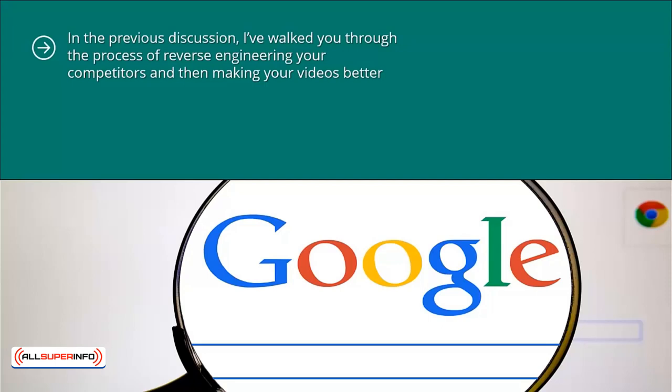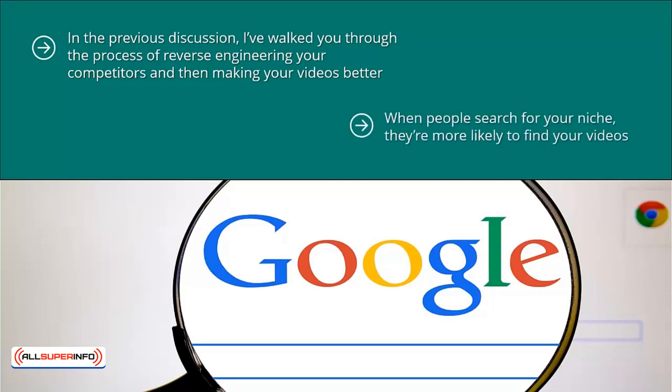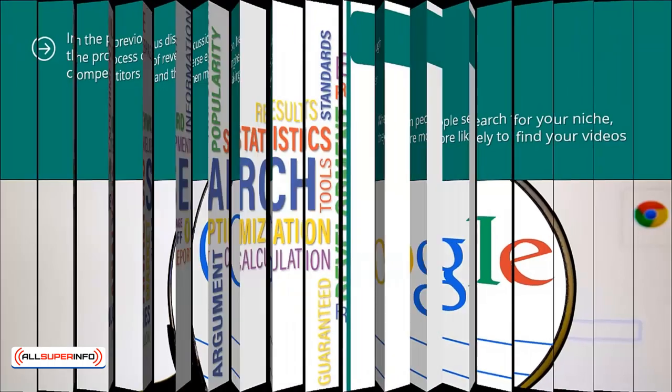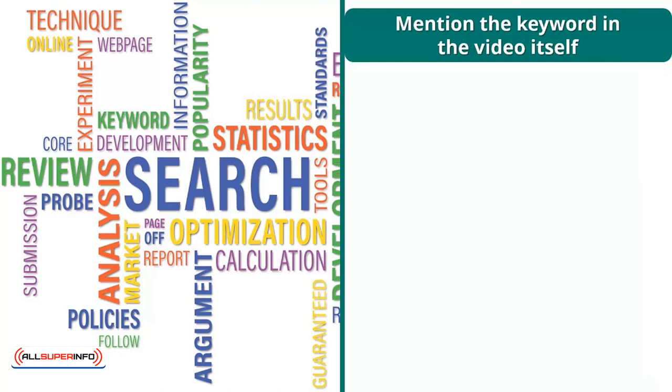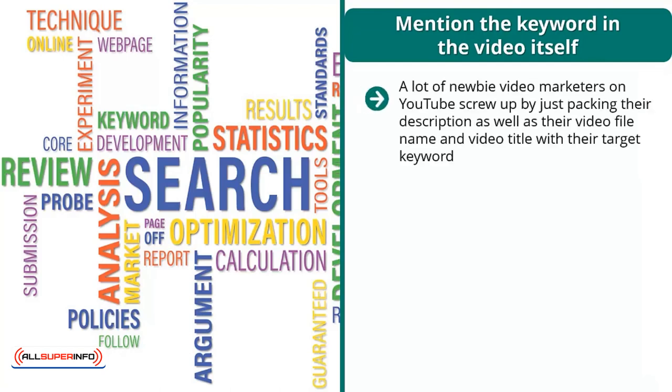How come? Well, if you follow these tips your videos will probably be more visible on YouTube. When people search for your niche they're more likely to find your videos. These tips mostly turn on visibility — they are aimed at getting you eyeballs for your videos.